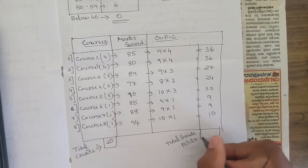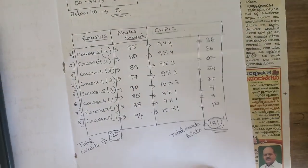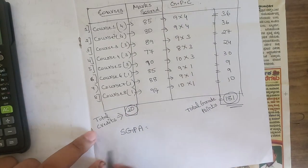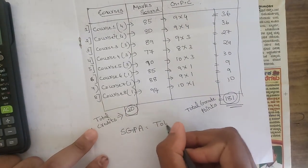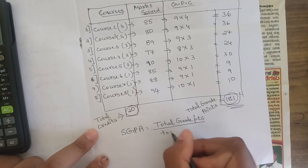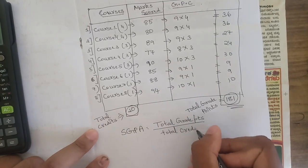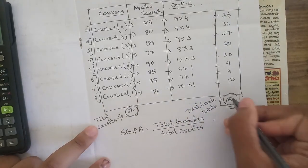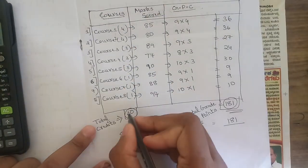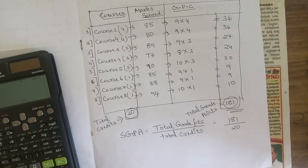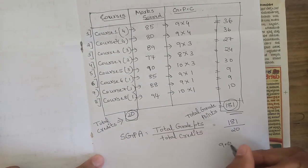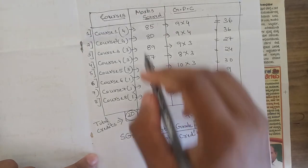After summing all the grade points, we get 181. The SGPA formula is: total grade points divided by total credits. We found total grade points = 181 and total credits = 20. So SGPA = 181 ÷ 20 = 9.05. That is your SGPA for this particular mark sheet.